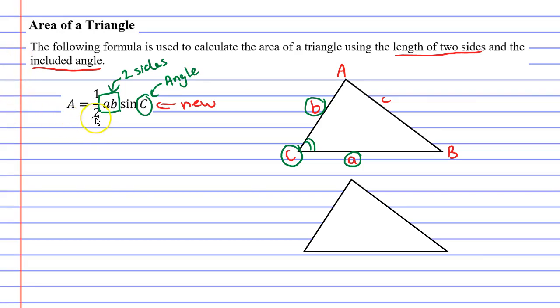Alright, now this formula can change. It can be different. For example, let's take out these green markings. Let's say that we wanted to use lowercase a as a side and lowercase c. And that would mean we would need the angle at capital B because this is the included angle between a and c. How would our formula change?